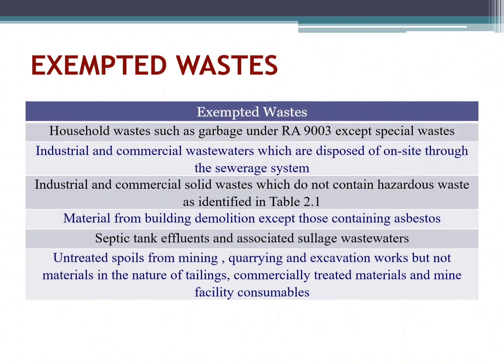Exempted waste: household waste such as garbage under RA 9003. Exempted special waste includes industrial and commercial wastewaters disposed of on-site through the sewage system, industrial and commercial solid waste which do not contain hazardous waste, materials from building demolition except those containing asbestos, septic tank effluents and associated sewage wastewaters, untreated spoils from mining, quarrying, and excavation works, and commercially treated materials and mine facility consumables.